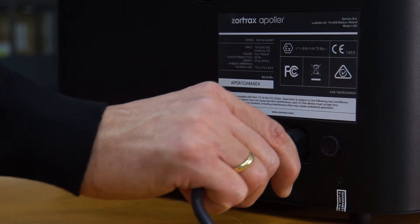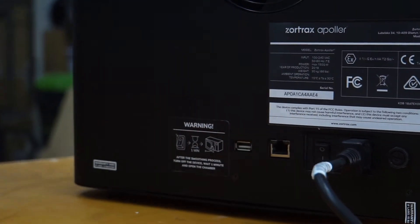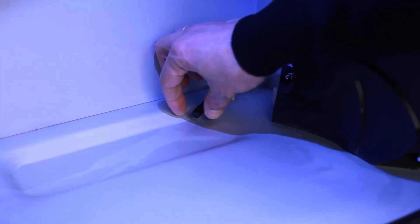Plug in the power cable and turn on the device. Remove the plug from the drain tube.